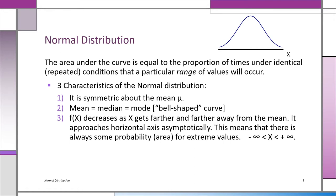Finally, as you move further and further away from the mean, f(x) gets smaller and smaller — the same on the right as the left. X goes from plus infinity to minus infinity. It's asymptotic, meaning the curve gets closer and closer to the horizontal axis but never quite touches it.